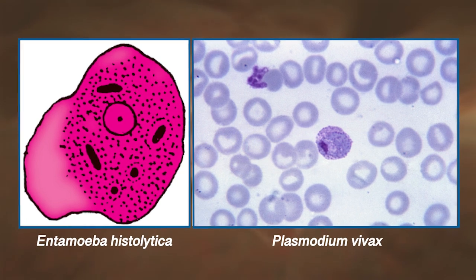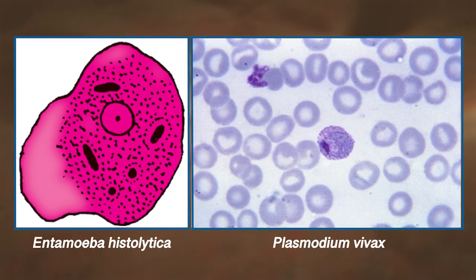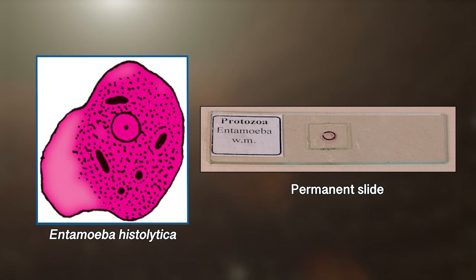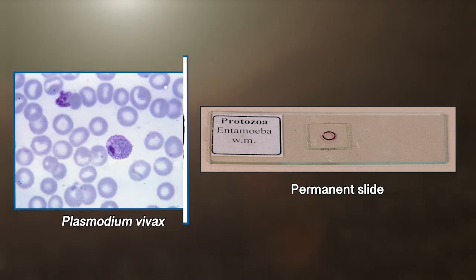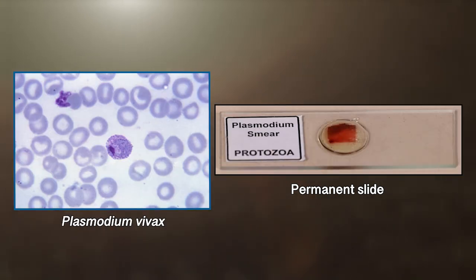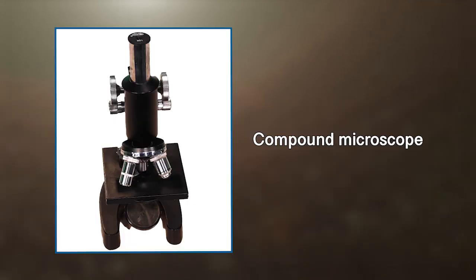The materials required for this session are: a permanent slide and photograph of Entamoeba histolytica, a permanent slide of human blood infected with Plasmodium vivax, a compound microscope, and tissue paper.